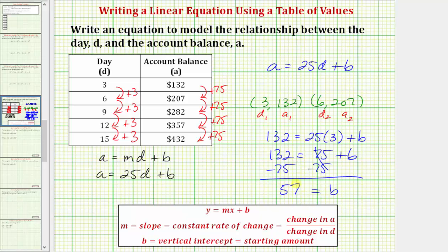So because B equals 57, this means at day zero, there was 57 dollars in the account, which also means our equation relating A and D is A equals 25D plus 57.